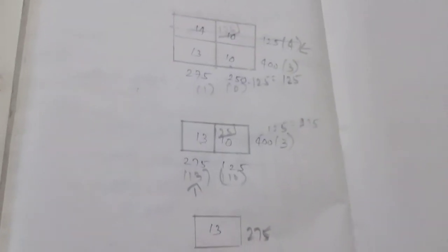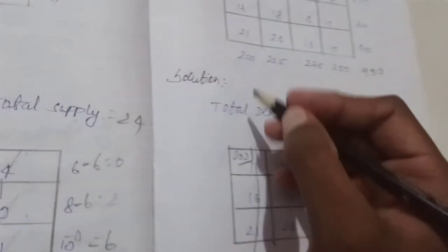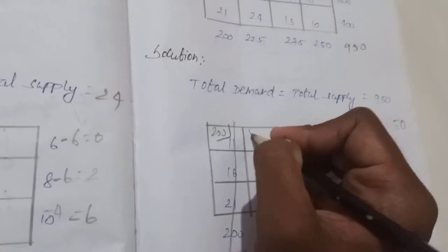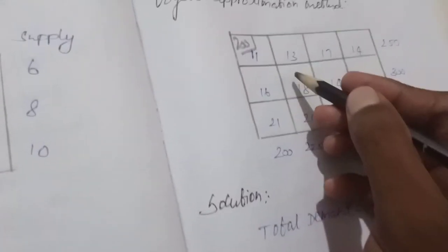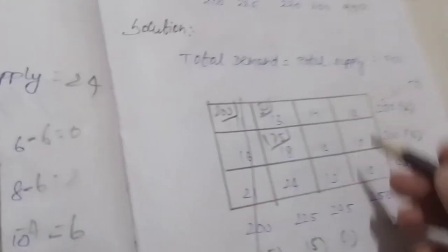Now we submit the final allocation numbers. First, we allocate 200. Next, we allocate 200. Next, we allocate 200. Next, we allocate 100. Next, we allocate 100. Next, we allocate 100. Then we allocate 200. Next, we allocate 100.